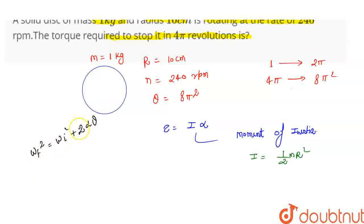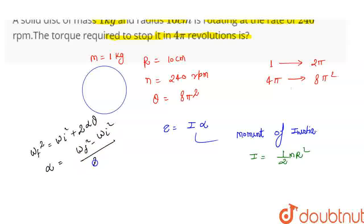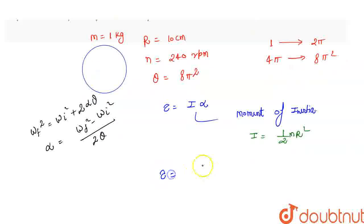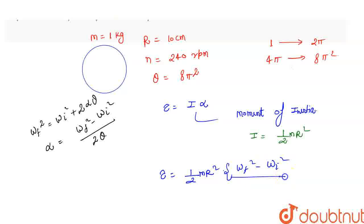This is the rotational motion third equation: omega final squared equals omega initial squared plus 2 alpha theta. So alpha equals omega final squared minus omega initial squared, divided by 2 theta. We substitute this into the torque formula: tau equals half m r squared times (omega final squared minus omega initial squared) divided by 2 theta.